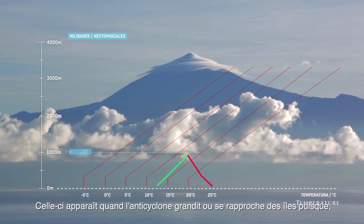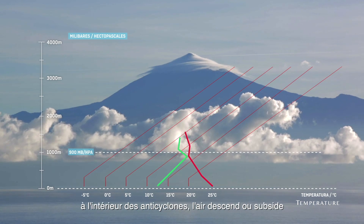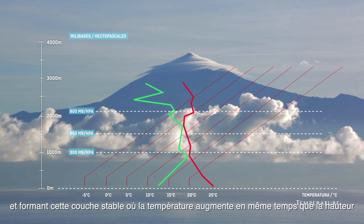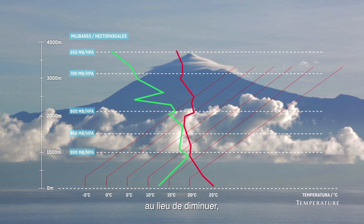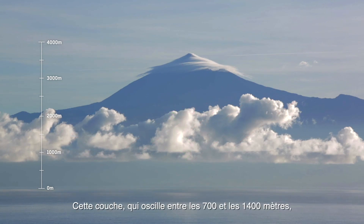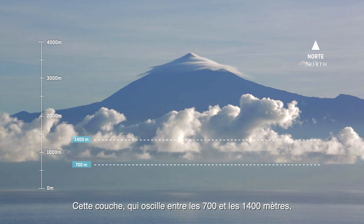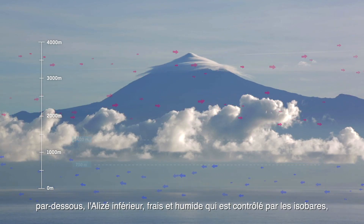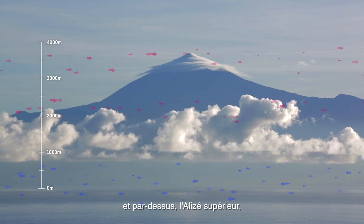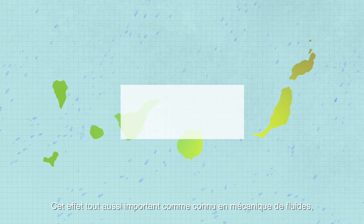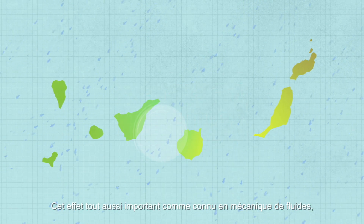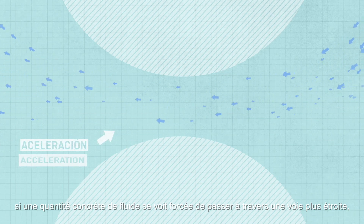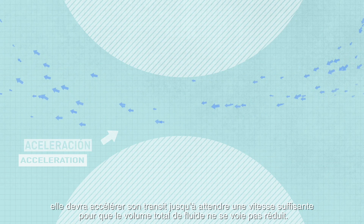This occurs when the anticyclone grows or approaches the island, since the air inside anticyclones descends or subsides, generating higher temperature caused by increased pressure. This forms a stable layer where temperature increases with height instead of decreasing as would be expected. This layer, which ranges between 700 and 1400 meters, delimits two different air currents: below it the cool, humid lower trade wind controlled by the isobars, and above it the warm, dry upper trade wind. This is the Venturi effect — in a nutshell, when a particular amount of fluid is forced to pass through a narrow constriction, it will have to accelerate to prevent the total fluid volume from decreasing.